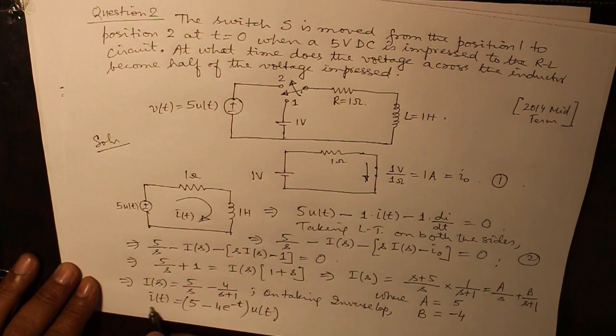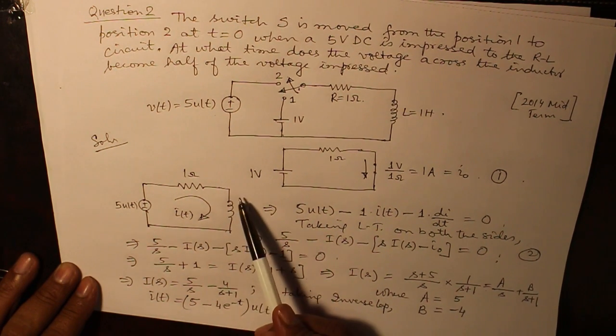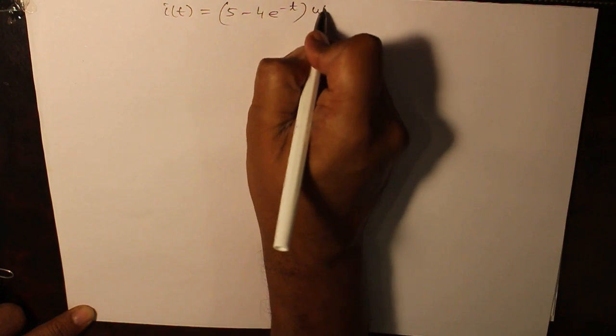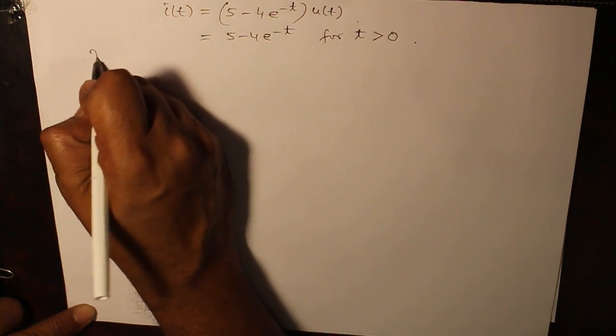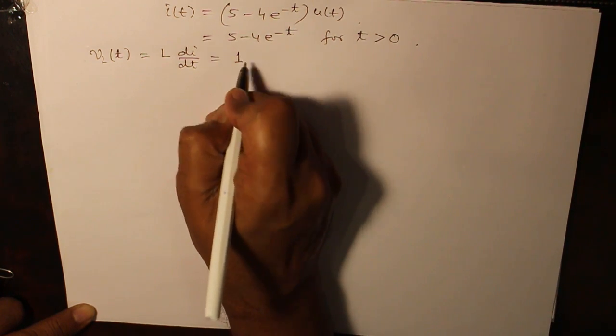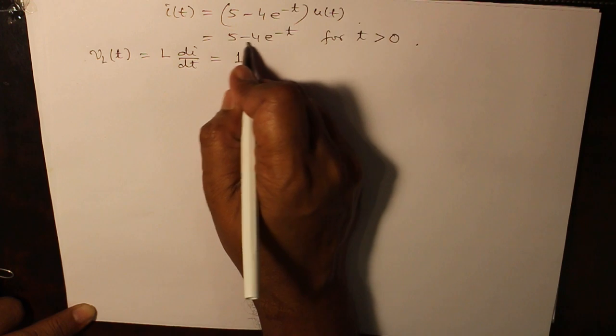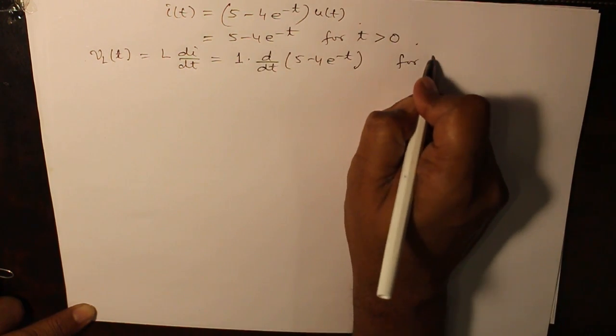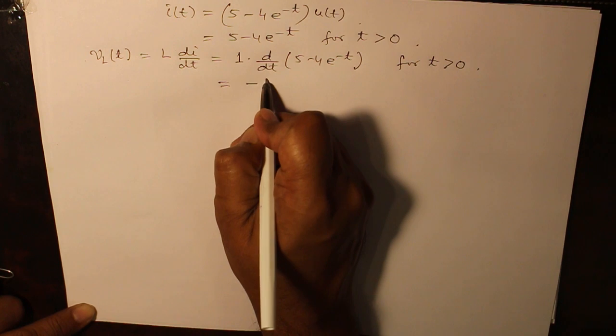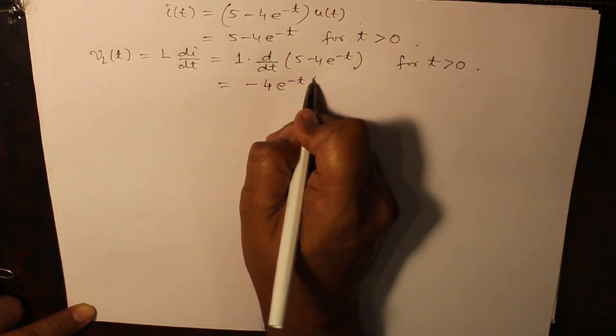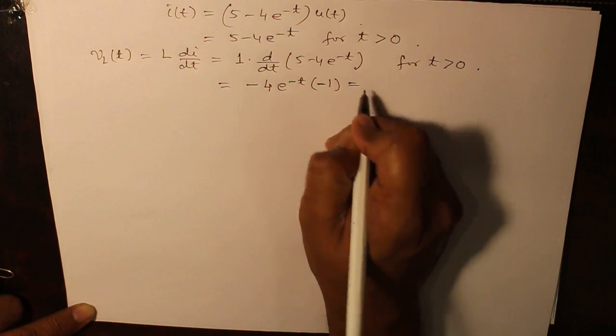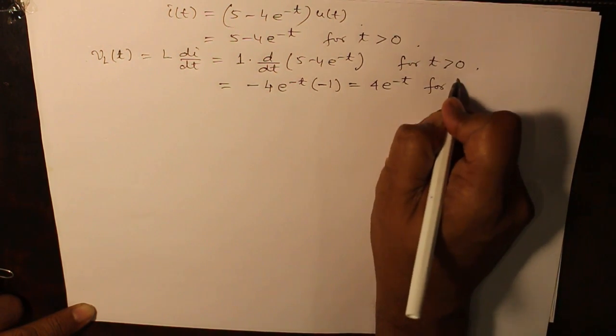Now we have obtained the value of IT. We ought to find out the voltage across the inductor, which is equal to L DI by DT. The value of L is 1. So this value gives you 4 e raised to the power minus t for t greater than 0.